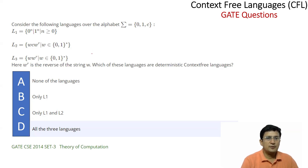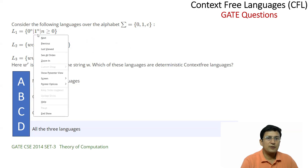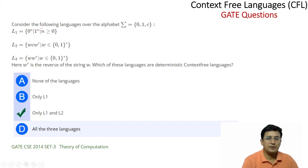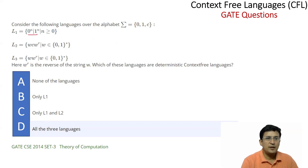Consider the language over the alphabet 0, 1, and c. The first language is 0 power n, 1 power n, where n is greater than or equal to 0. There is a symbol involved in between. We are making a comparison of 0s with 1s. There are so many 0s as we have 1s. This comparison is possible. We use a stack and we say that this is context free.